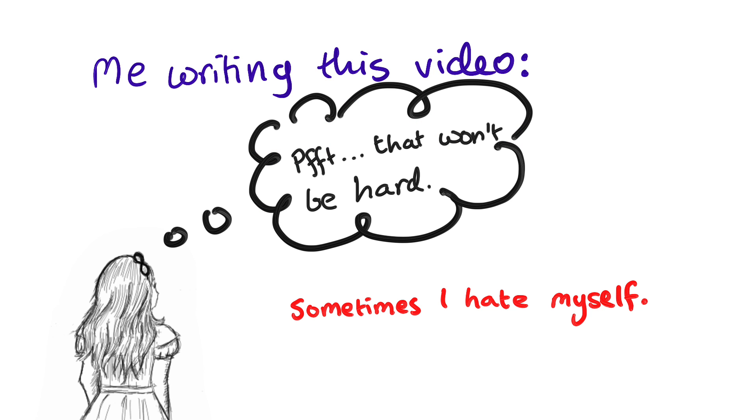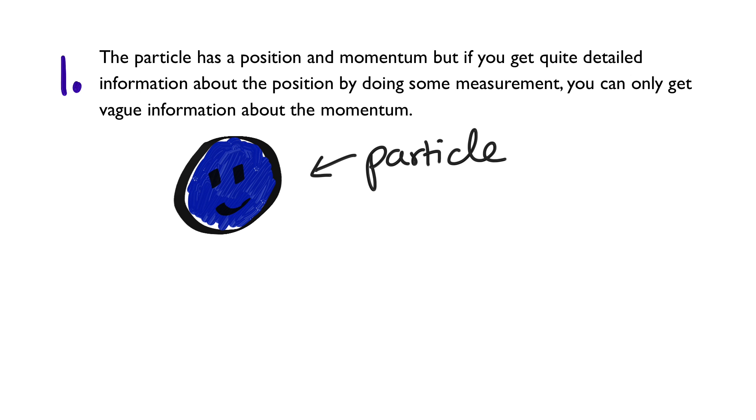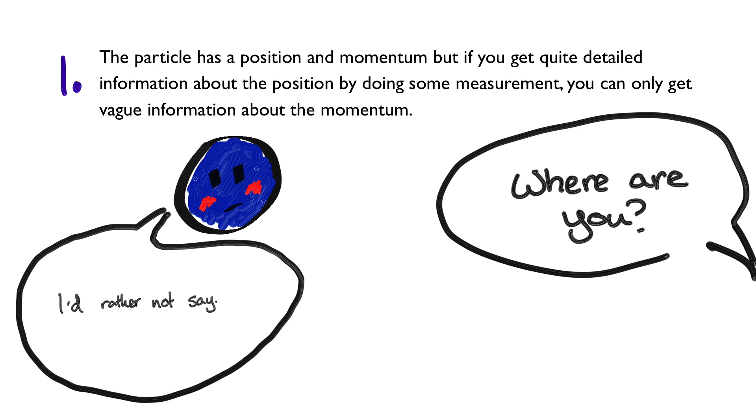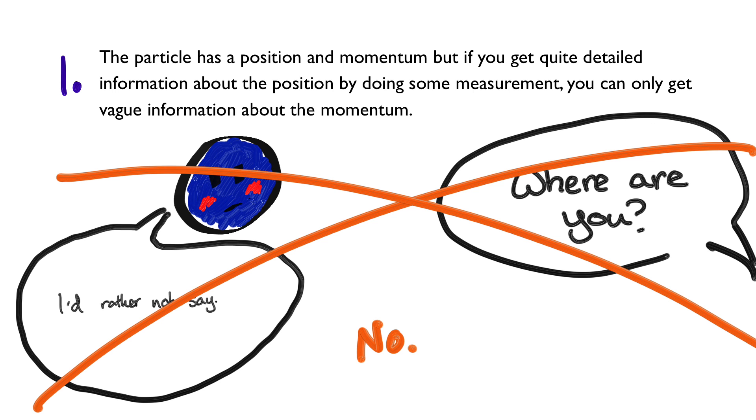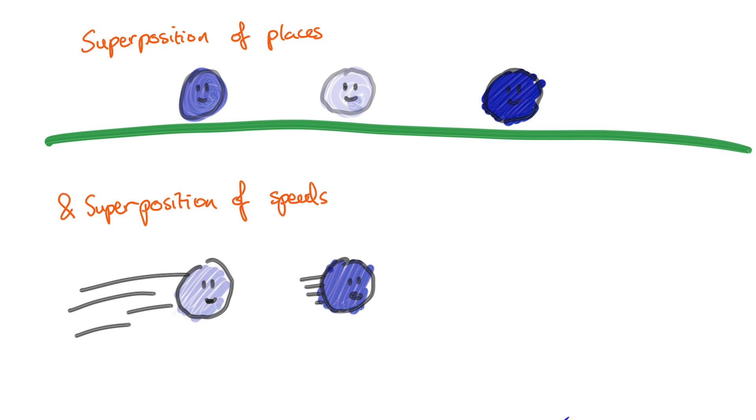Option 1 first. The really big issue with this option is that it says quantum particles really have a position and a momentum, just like classical physics, but they're just shy about it. This is not at all what quantum mechanics says. What quantum mechanics says is a particle doesn't have just one place or one speed it's going at. Instead, while they're not observed, they can be in what we call a superposition of many places and many speeds.